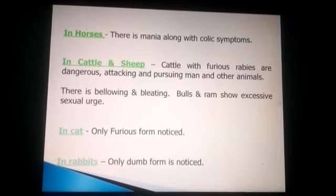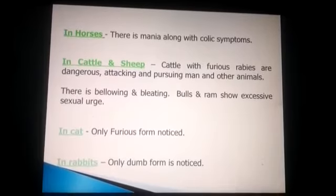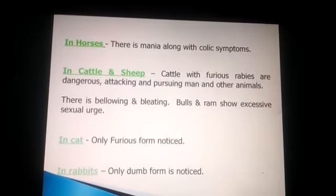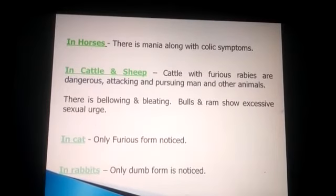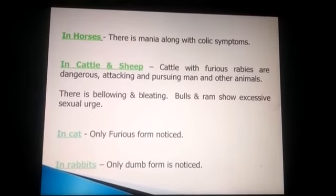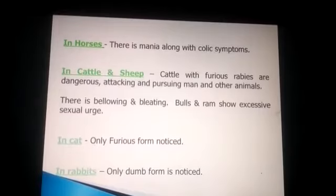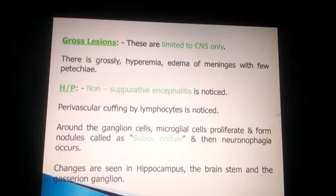In horses, there is mania along with colic symptoms. In cattle, the furious form occurs, animals are dangerous with bellowing and butting by bulls, and there is excessive sexual excitement.